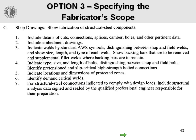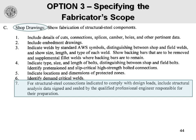Here's another example regarding shop drawings. Those familiar with Option 3 know that fabricators provide design calculations but also shop drawings — two distinct different things. Here's an example where Note 7 reads: for structural steel connections indicated to comply with design loads, include structural analysis data signed and sealed by the qualified professional engineer. At this particular job, this was not interpreted as shop drawings having to be signed and sealed — it was interpreted as the calculations needing to be signed and sealed. It turned out the engineer actually wanted the shop drawings signed and sealed. I would consider this not to be an effective way of communicating that desire.